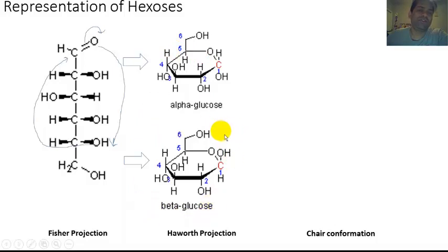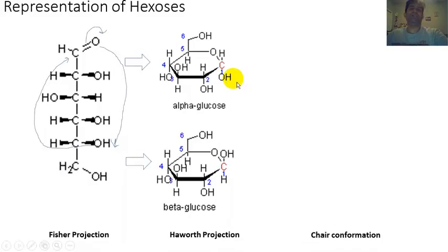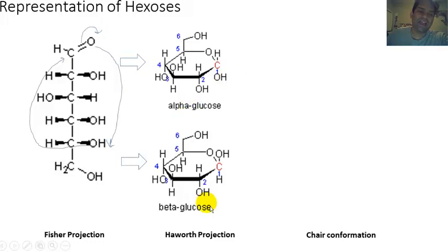This is one representational view of hexoses. In this case, we're looking at glucose. The projection in which the OH is below the plane of the ring is known as the alpha-glucose anomer, and the projection in which the OH group is above the plane of the ring is the beta-glucose anomer.